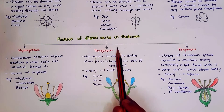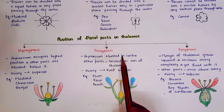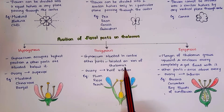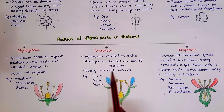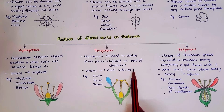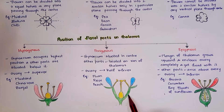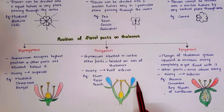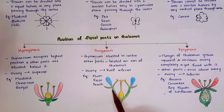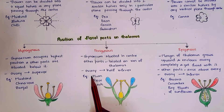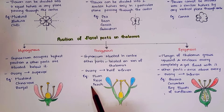Coming to perigynous: the gynoecium is situated in the center and other parts are located on the rim of the thalamus. Here the ovary is half inferior or half superior. Examples of perigynous are plum, rose, and peach.